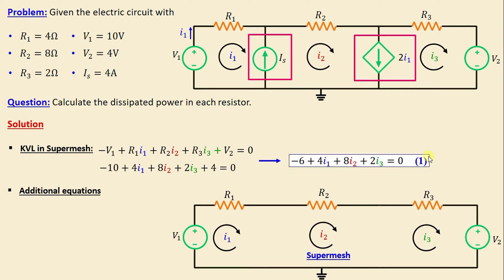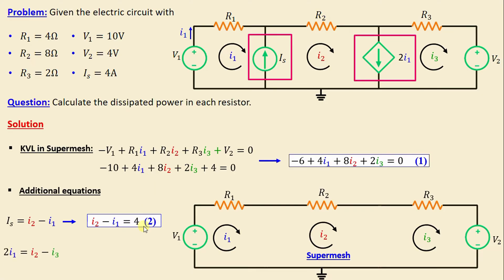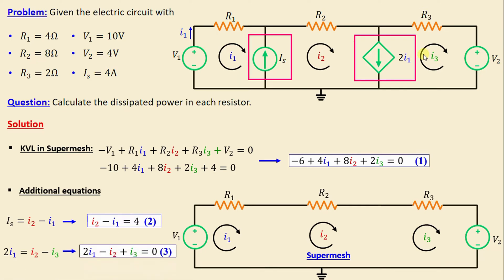To get the two other equations, let's focus on the current source IS. We can write IS equals I2 minus I1, which means I2 minus I1 equals 4 amps — I will call this equation 2. Moving on to the dependent source, we have 2·I1 equals I2 minus I3, which means 2·I1 minus I2 plus I3 equals 0 — I will call this equation 3.